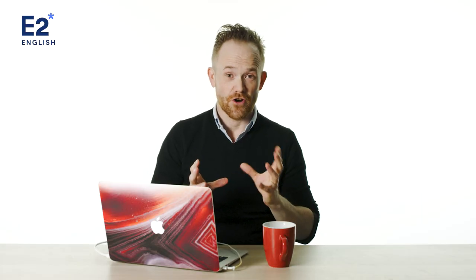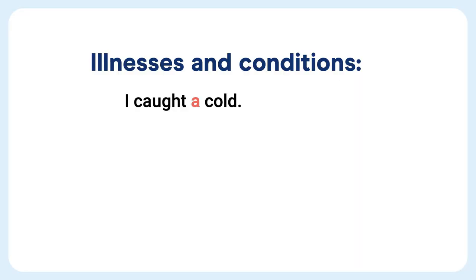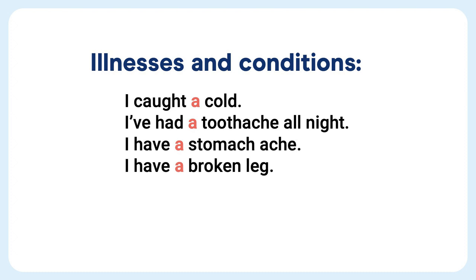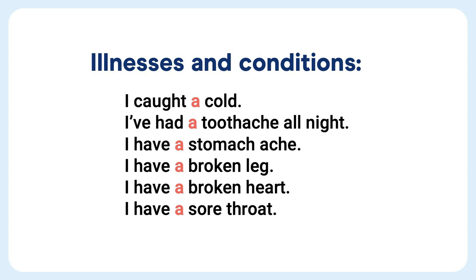Let's look at one more: illnesses and conditions. We often use the indefinite article with certain illnesses and conditions. 'I caught a cold.' 'I've had a toothache all night.' 'I have a stomachache.' 'I have a broken leg.' 'I have a broken heart.' 'I have a sore throat.' 'He had a stroke.' Notice that we're not using articles with specific illnesses that have been given specific names — it's not 'a diabetes' or 'a COVID.'